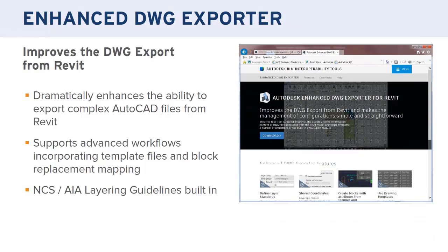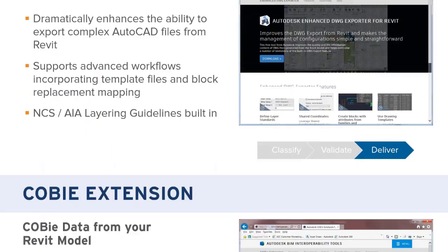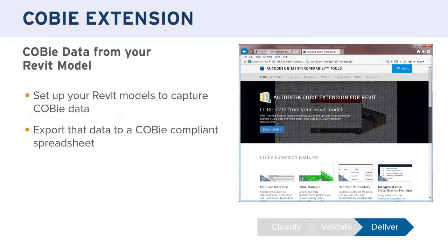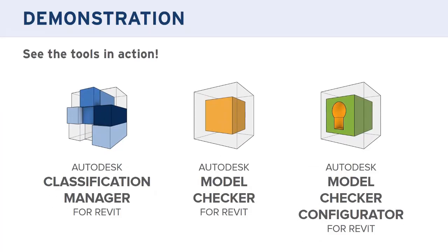Some other tools on the website that we're not going to touch on today include the Enhanced DWG Exporter. Revit allows you to export to DWG files, but there are limitations with layering and exporting annotation symbols. This tool can help with that. The other tool we're not going to cover today on the deliver end is the COBie extension — if you need operations and maintenance data from your models, this is the best way to do that.